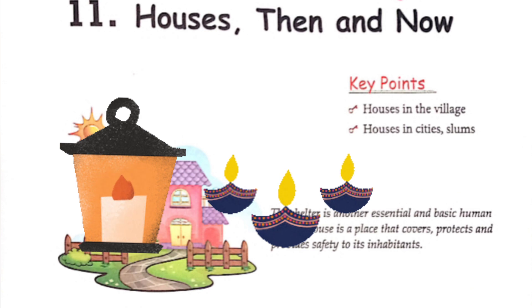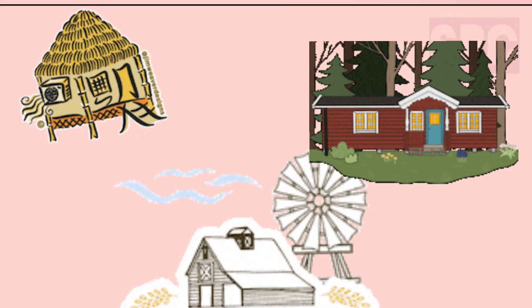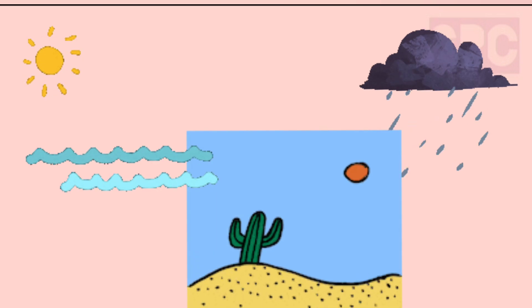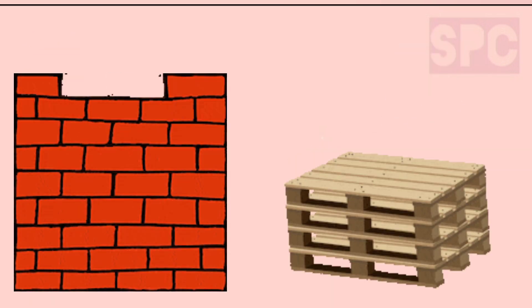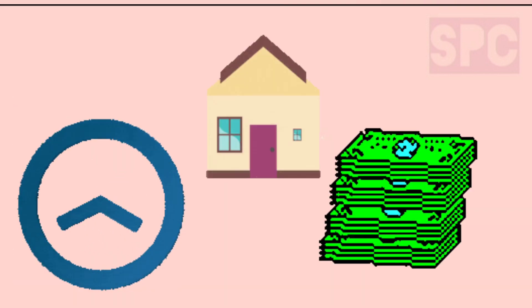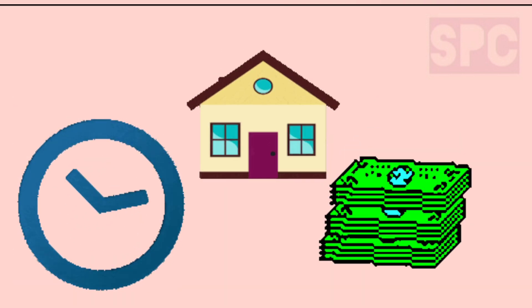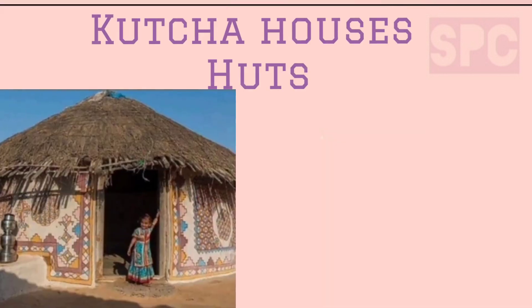As electricity was not present in those days, people used to use lanterns and diyas to light the houses during night. These days, different types of houses are built depending upon the climatic condition of the place, building materials available locally, and the amount of time and money available for the construction of the house.